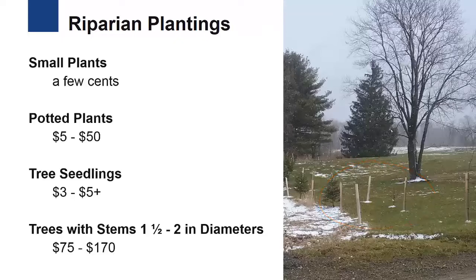Trees with stem diameters from one and a half to two inches may cost from $75 to $170 depending on type and species. Value and time spent planting trees often equals the purchase cost, which may include site preparation and installing protection such as tree stakes and planting tubes. Maintenance includes watering, pruning to correct structure, managing pests, and removing hardware as it becomes unneeded.